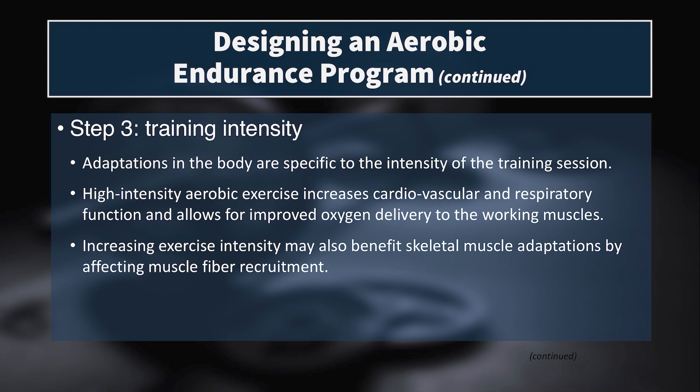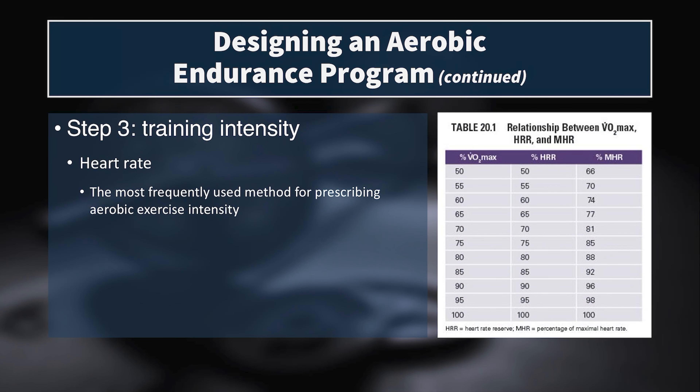Increases in exercise intensity may also benefit skeletal muscle adaptations by affecting muscle fiber recruitment. At faster speeds—like hill sprints or track repeats—muscles must contract more strongly and generate force more quickly, producing moderate improvements in muscular capacity. Comparing a long-slow-distance-only program to one that includes repeated sprints, both may yield similar endurance benefits, but the higher-intensity program additionally produces better strength and power in the muscles.